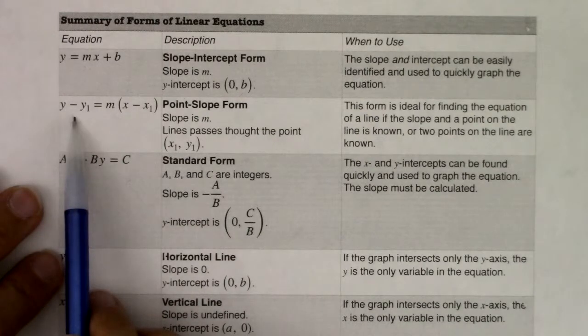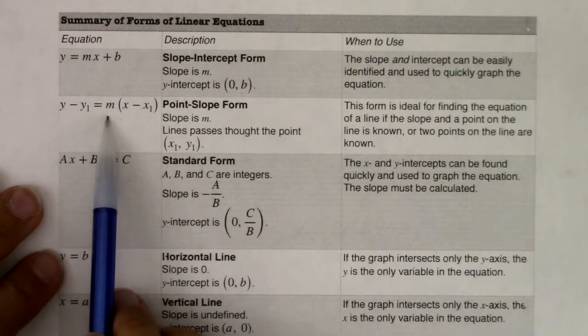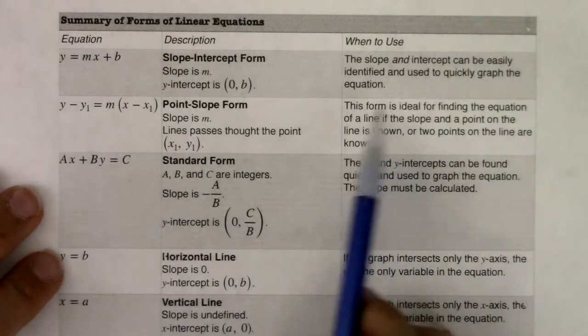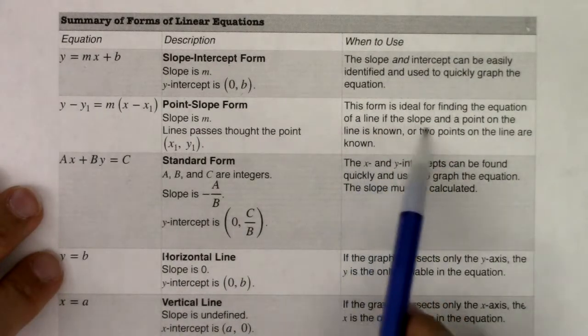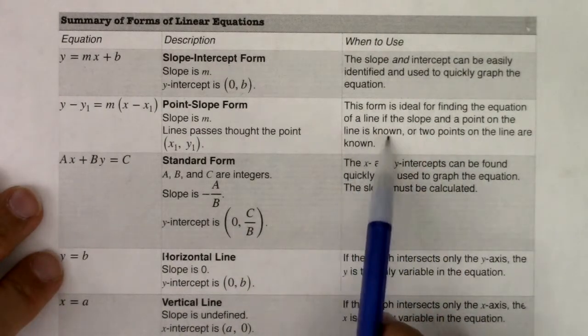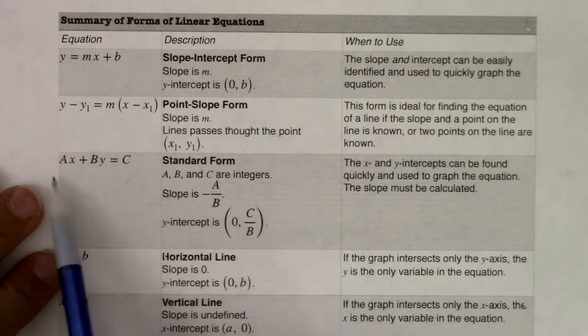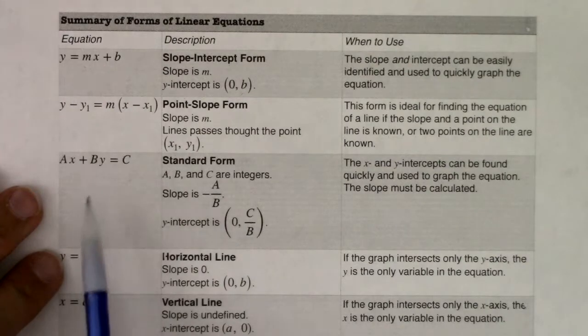So we have y minus y sub 1, equaling m times x minus x sub 1. Slope is m, line passes through the point x1, y1. This form is ideal for finding the equation of the line if the slope and the point of the line is known, or two points on the line are known. And we'll use that in a little bit. Standard form, it's a little bit less popular.